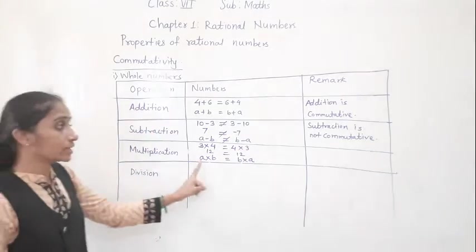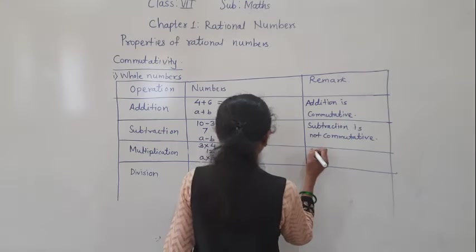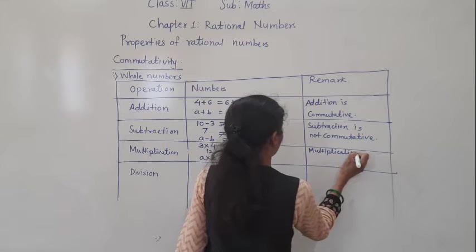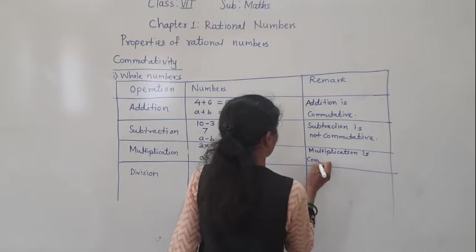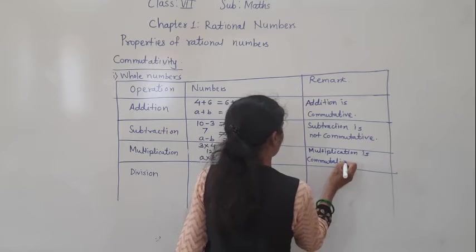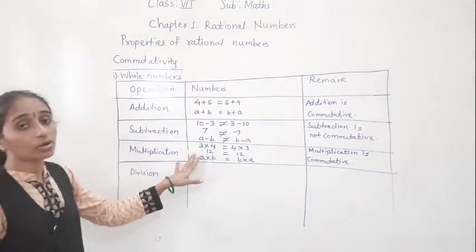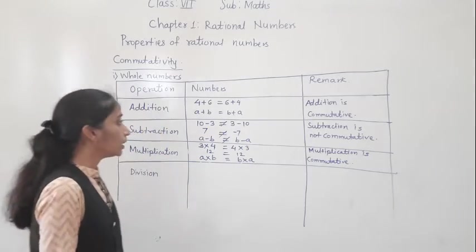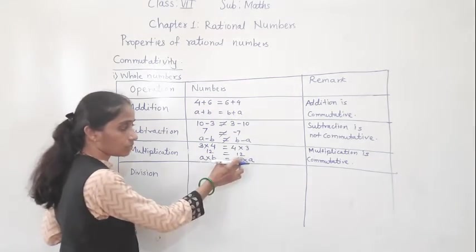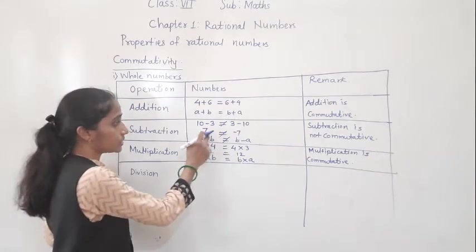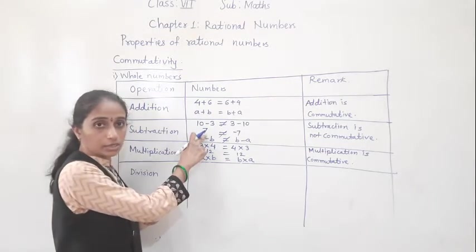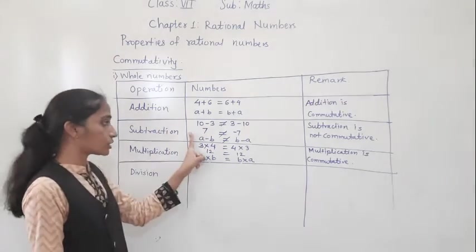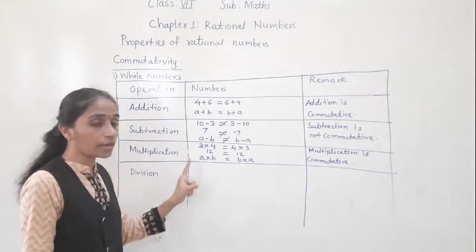So A into B is equal to B into A. Multiplication is commutative. When we change the order, the answer remains the same. So multiplication works under this property. But subtraction does not work. Now let's see for division.